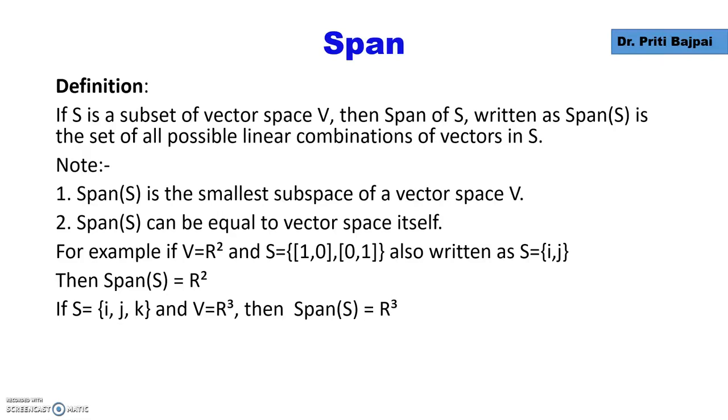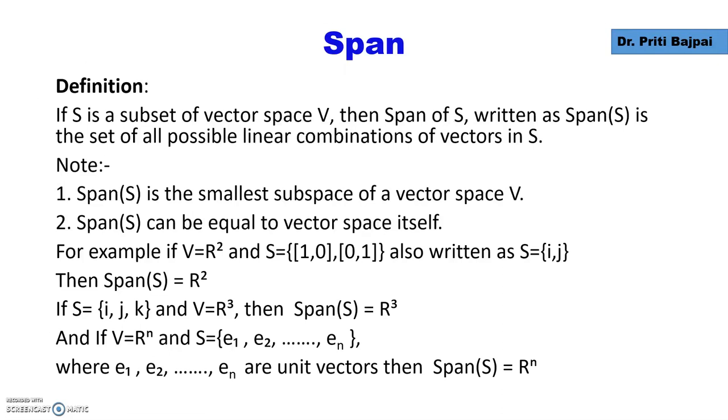In case of V equals R³, our unit vectors i, j, k if they are in the subset, then span of S is R³. And in general, if V is Rⁿ (the Euclidean n-dimensional space), then the subset S of the unit vectors e₁, e₂, ... eₙ will span the whole space Rⁿ.